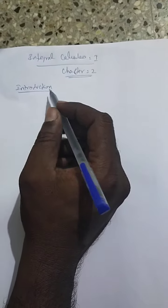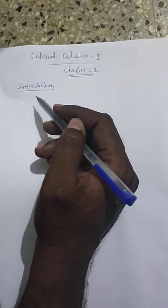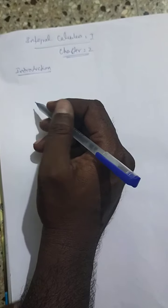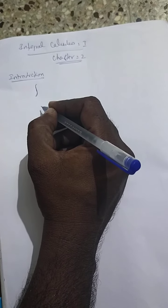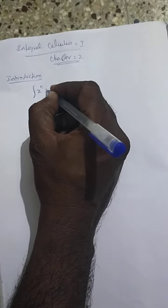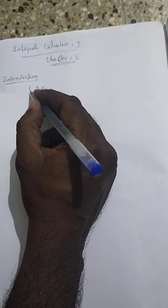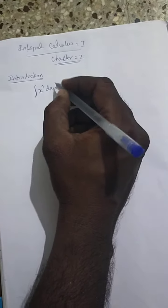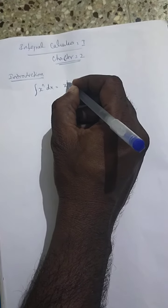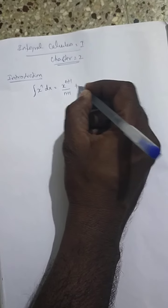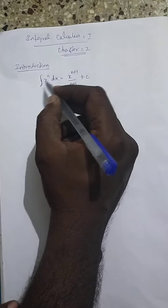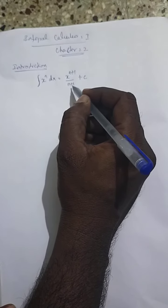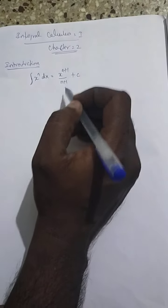Now, if you are in the classroom, I will teach you the basic concept of Integral Calculus. What is the basic formula? This is the symbol for Integral Calculus. The integration of x power n dx, with respect to x, the formula is: x power n plus 1 by n plus 1, plus c. Here, c is the constant — the arbitrary constant. This is a basic concept and the first formula in Integral Calculus.